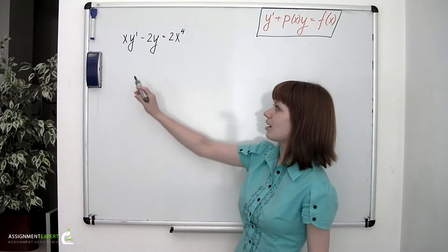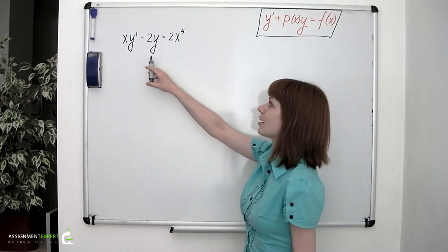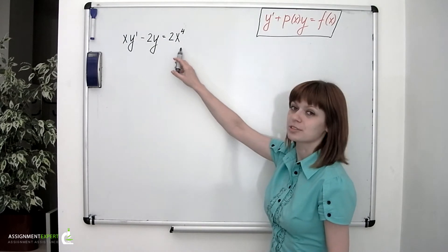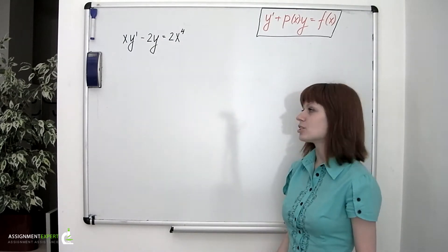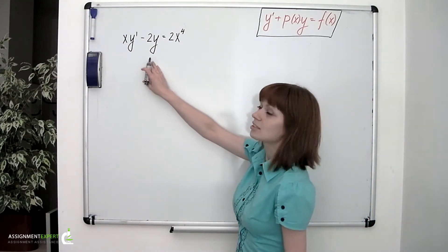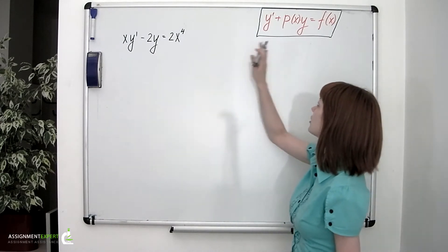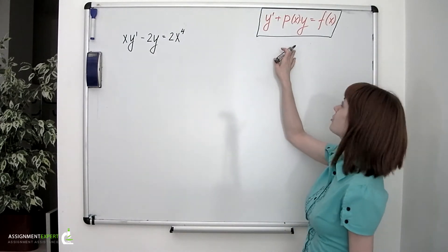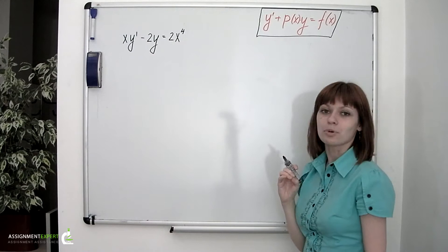Example 1. x times y prime minus 2y equals 2 times x to the 4th. The first thing we need to do is to put the given equation into the general form, which we have already written on our board in red, and boxed.